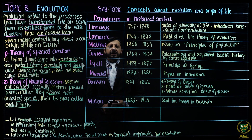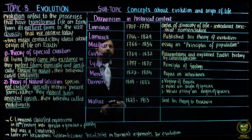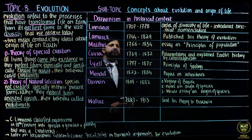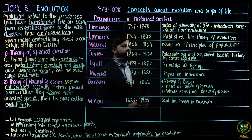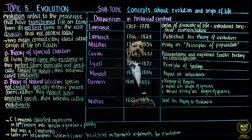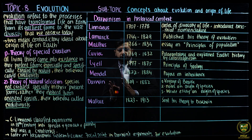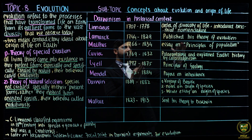First of all is Carolus Linnaeus. His life span is from 1707 to 1778. He thought about and arranged the order of diversity of life — he ordered and classified organisms.